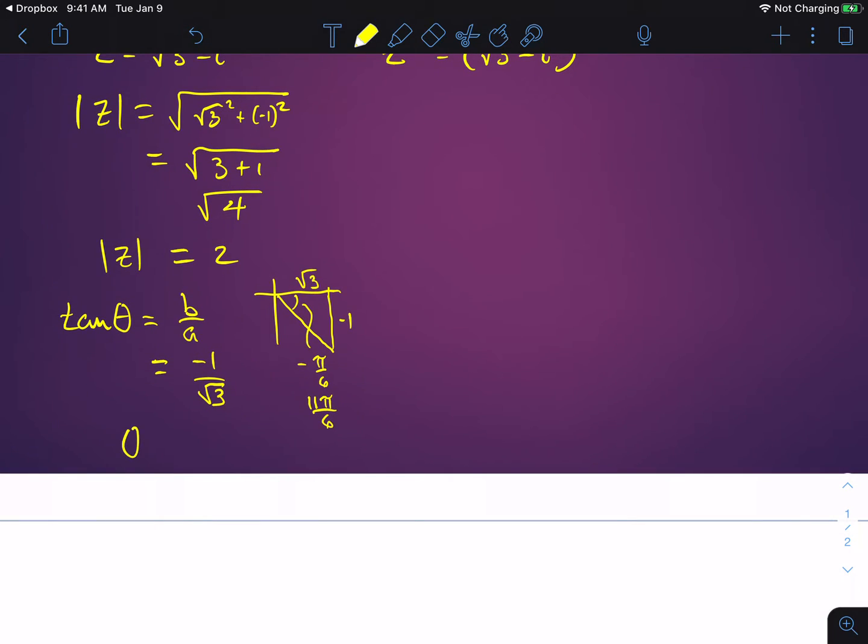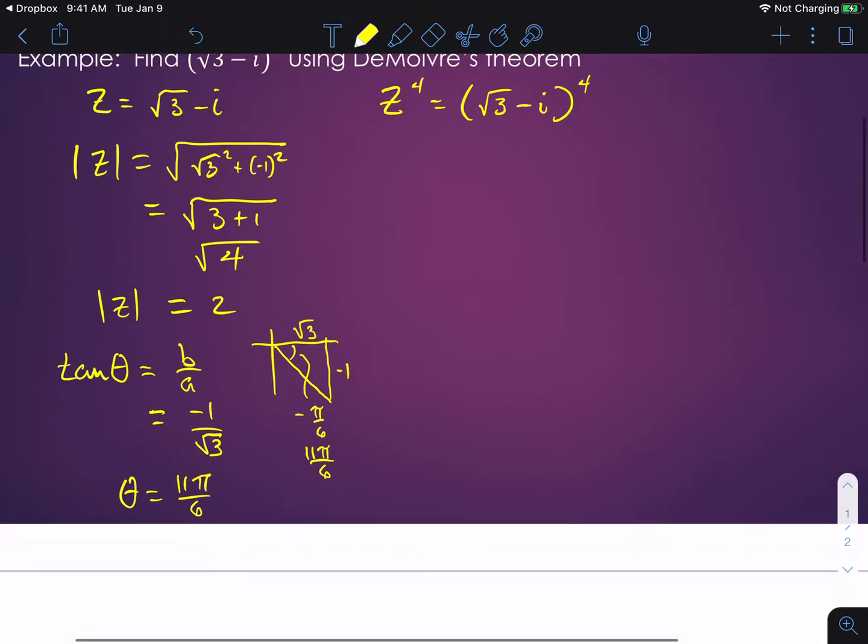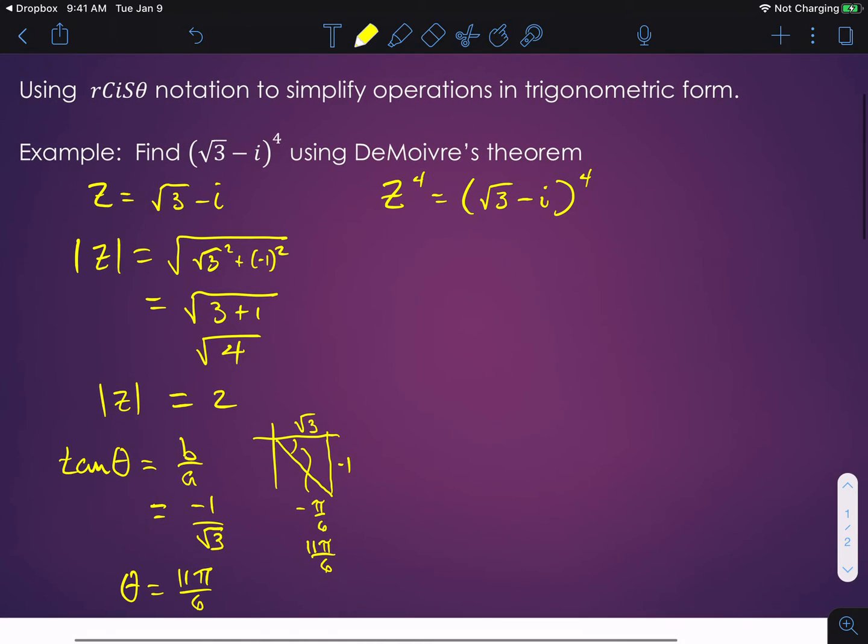So theta is equal to 11π/6. We learned that that means now, since theta is that and we know what r is, which is the magnitude of z, we can actually write that z is equal to 2 times the cosine of 11π/6 plus i times the sine of 11π/6.